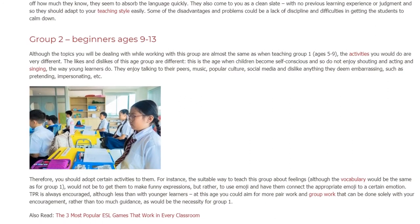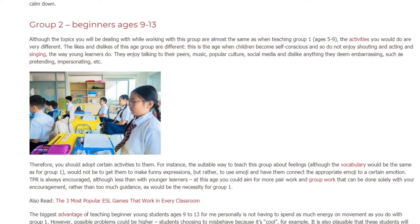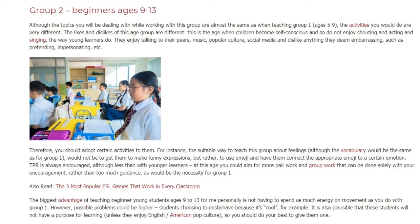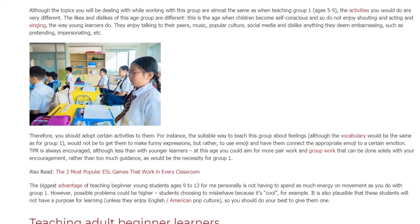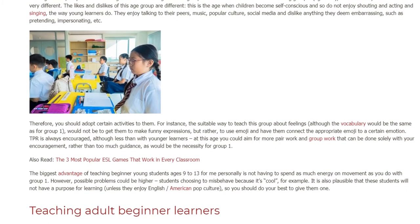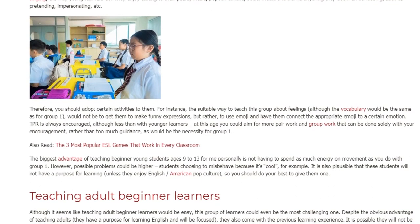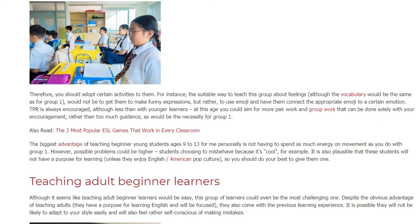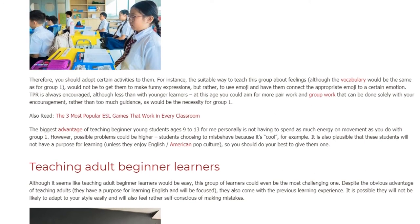Rather, use emoji and have them connect the appropriate emoji to a certain emotion. TPR is always encouraged, although less than with younger learners. At this age you could aim for more pair work and group work that can be done solely with your encouragement, rather than too much guidance as would be the necessity for Group 1. The biggest advantage of teaching beginner young students ages 9–13 is not having to spend as much energy on movement as you do with Group 1.